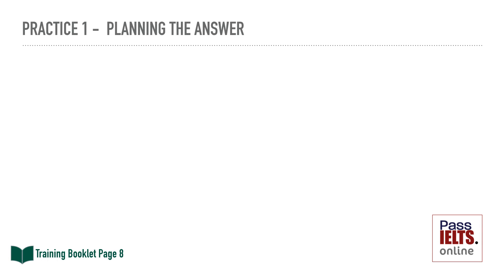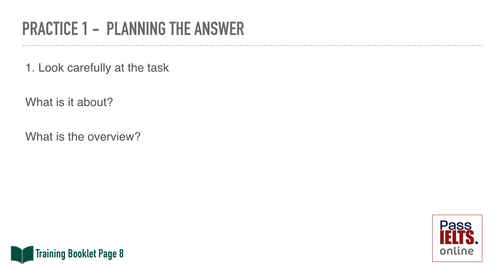Now we'll go through all these stages in more detail. First of all, you need to look carefully at the task — decide what it's about. Make sure you take time to understand what the diagram is showing and that you're not reading something incorrectly. Then decide what is the overview. If you hold the page away from you, sometimes you can see the overview better — this only works for charts and graphs, not tables, as that way you don't focus on the numbers. Then you need to choose the most significant main features, but don't describe everything.